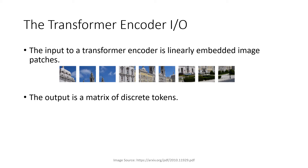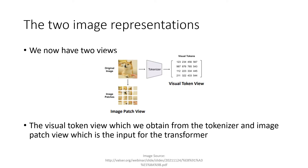To understand BEIT, we need to understand the inputs and outputs of a transformer encoder. The input to a transformer encoder is linearly embedded image patches — patches which are linearly embedded. The output is a matrix of discrete tokens, similar to what we have seen in the tokenizer. So now we have two different image representations: one is our visual token view generated using our tokenizer, and the other is our patch view.